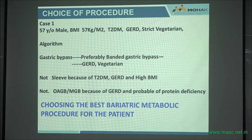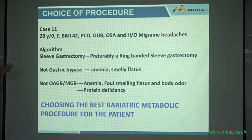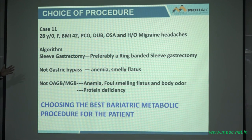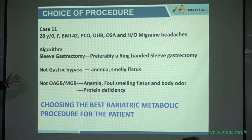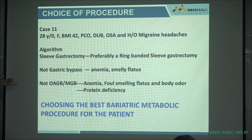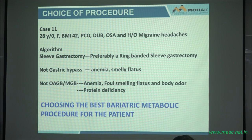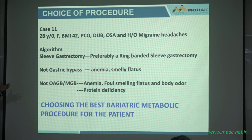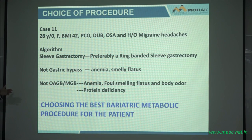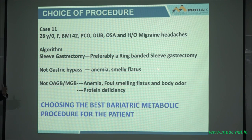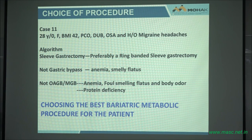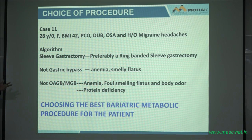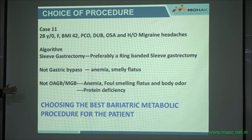Case number two: 28-year-old female, BMI of 42, polycystic ovary disease, dysfunctional uterine bleeding, osteoarthritis, migraine headaches. Give her a sleeve — preferably a ring-banded sleeve. Why not a gastric bypass? The patient has dysfunctional uterine bleeding. Gastric bypass causes anemia because you bypass the duodenal axis. There's a procedure that can make the patient lose the same weight without increasing morbidity. You don't use an MGB because of the anemia, the foul-smelling flatus, the body odor, and the possibility of protein deficiency.